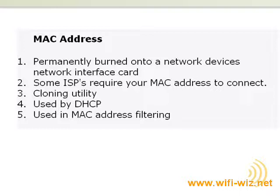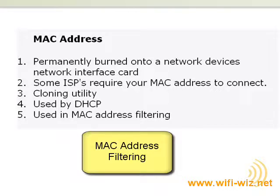Another important use of MAC addresses is called MAC address filtering. Basically, this allows you to set up your router to only accept wireless associations with computers that have certain MAC addresses. When a computer tries to connect to your wireless network, the router will look at a table of MAC addresses, and if it doesn't find that computer's MAC address, it does not allow a connection. This is actually quite a good form of security, although it can be spoofed, but it's very easy to set up.